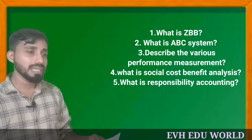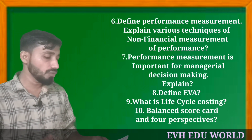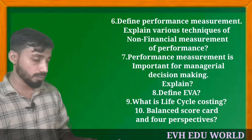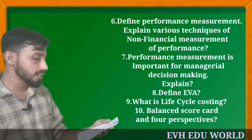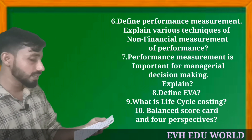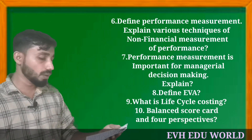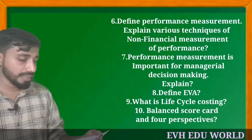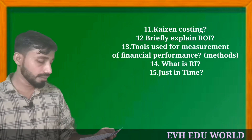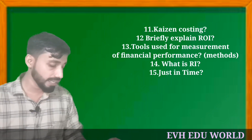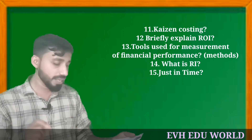What is responsibility accounting? Define performance measurement. Explain various techniques of non-financial measurement of performance. Performance measurement is very important for managerial decision making — explain. Define EVA. What is life cycle costing? Balanced scorecard and its four perspectives, Kaizen costing, ROI — Return on Investment. Tools used for measurement of financial performance.